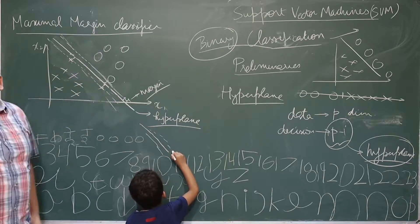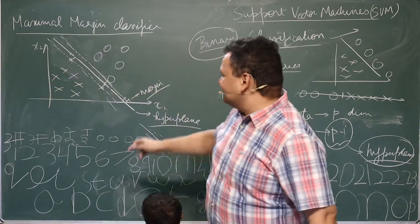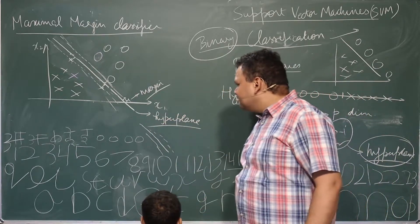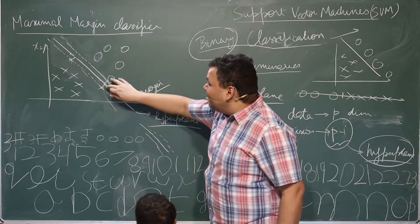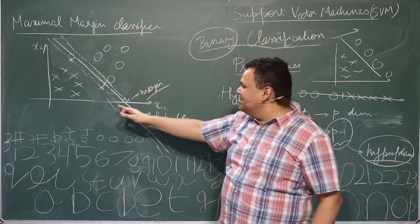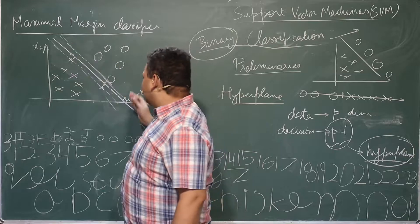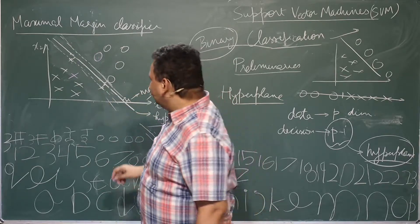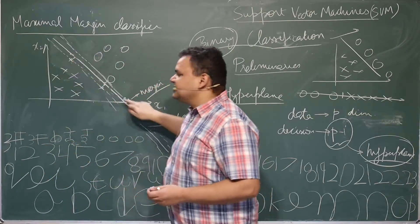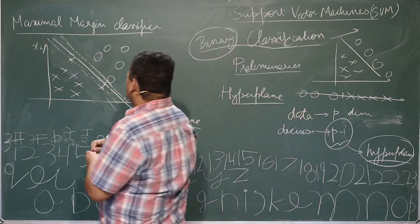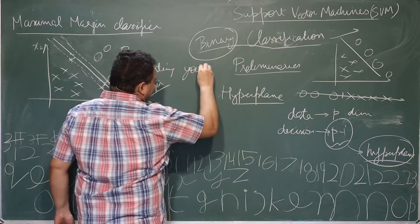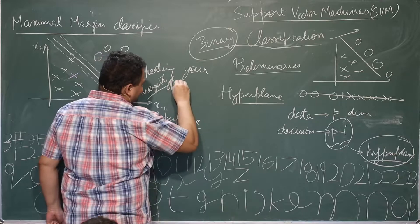Moving the points on the other side is also going to affect your hyperplane — the maximal margin hyperplane. Only these three points are affecting your decision boundary, or your maximal margin hyperplane. In one sense, these three points are supporting your decision boundary — supporting your hyperplane.